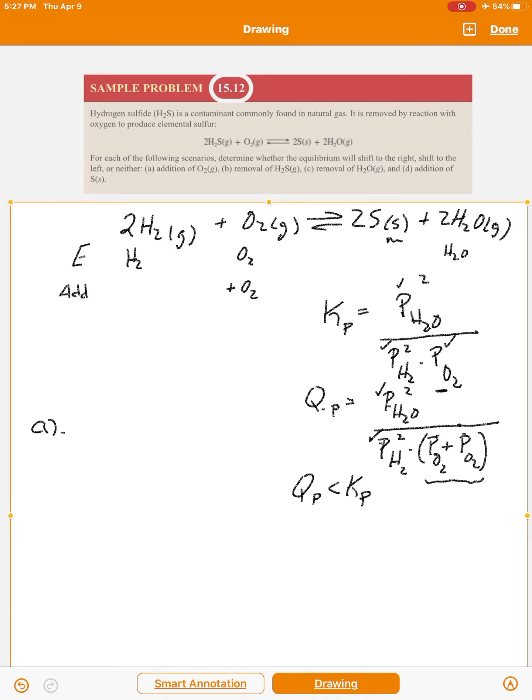And what did we say about the case where Q is less than K? If Q is less than K, the reaction goes that way, and the way we would say that is that it shifts to the right. Okay, so what I'm doing is I'm saying I'm going to add O2, so it's going to be bigger. If O2 is bigger, that means the ratio in Q would be smaller than it is for K. So Q is less than K, the reaction shifts to the right. Let's try B.